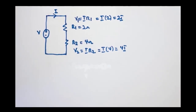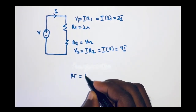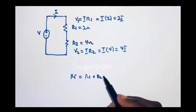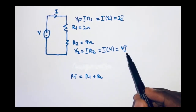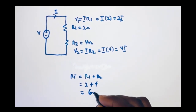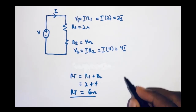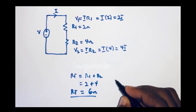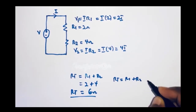The total resistance of resistors connected in series is given by their sum: Rt equals R1 plus R2. In this case, R1 is 2 ohms and R2 is 4 ohms, so we have 2 plus 4 which gives us 6 ohms. In a situation where we have three resistors, the total resistance is given by Rt equal to R1 plus R2 plus R3.